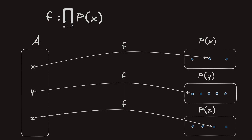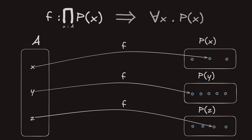If one of these propositions were uninhabited, such a function could not have been constructed. The analog of this in classical logic is: for all x, Px is true. In logic, this is called a universal quantifier.